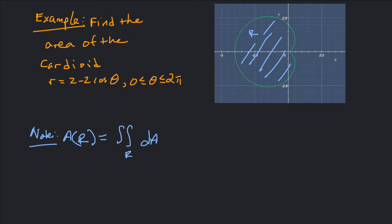Hey guys, we've got another double integral to do. We want to find the area of a cardioid. This shape is r = 2 - 2cos(θ). If you haven't checked it out already, check out my video on plotting polar curves to see how we can plot a cardioid like this. The cardioid looks a little bit like a heart — depending on the coefficients, it can change its shape a little bit.